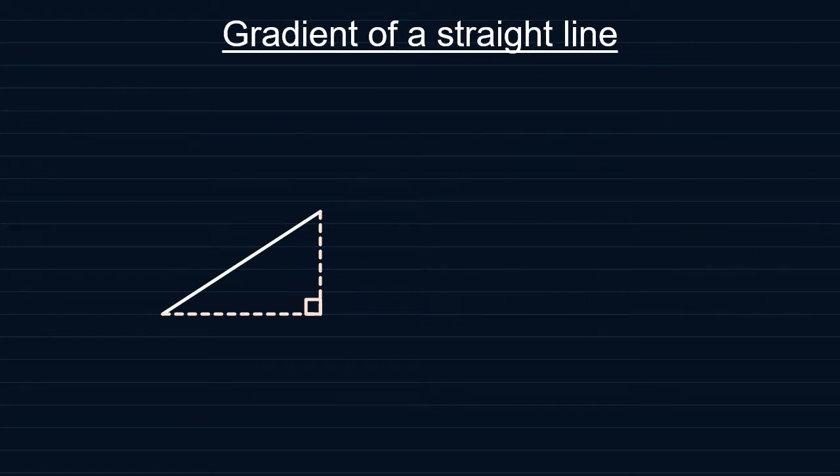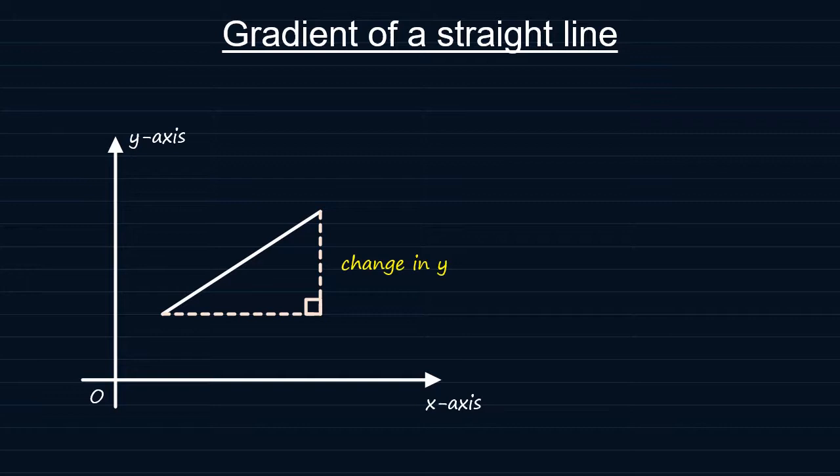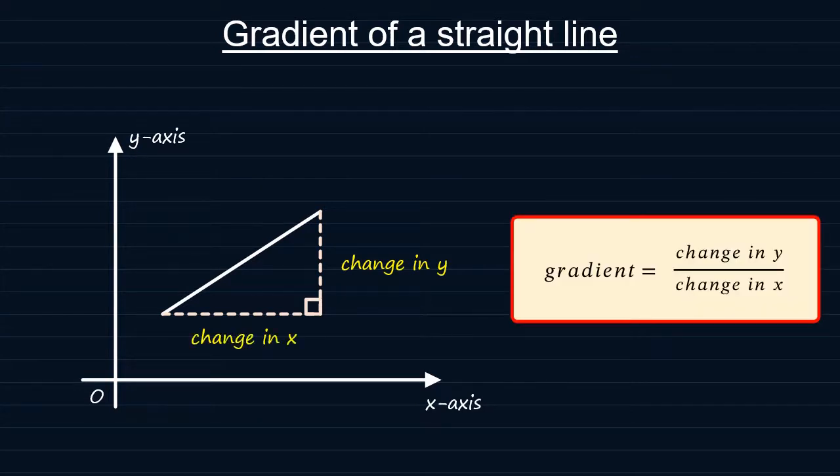If we have a Cartesian plane, then gradient can be given by change in y divided by change in x. Change in y is the vertical displacement. Change in x is the horizontal displacement.